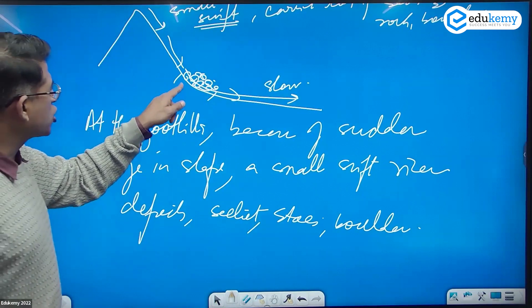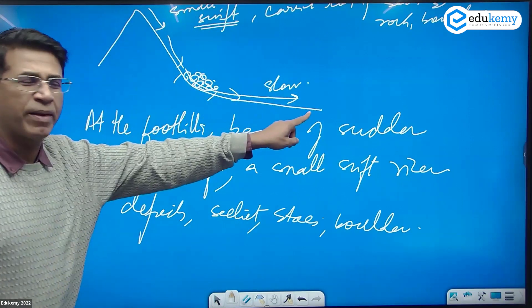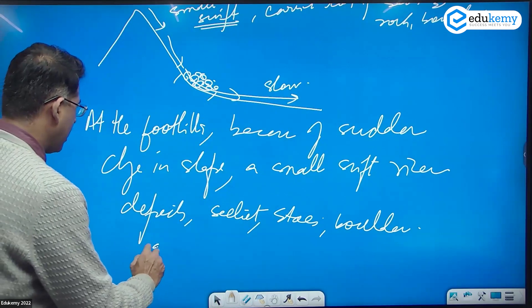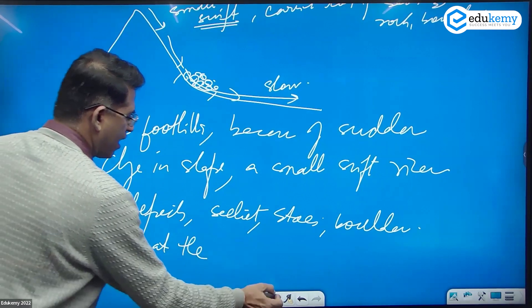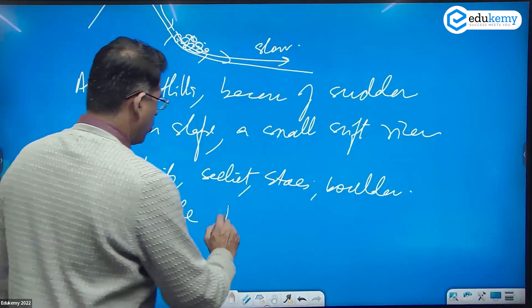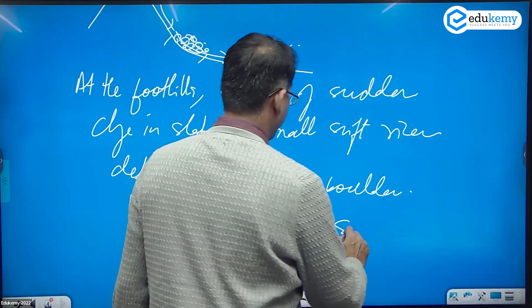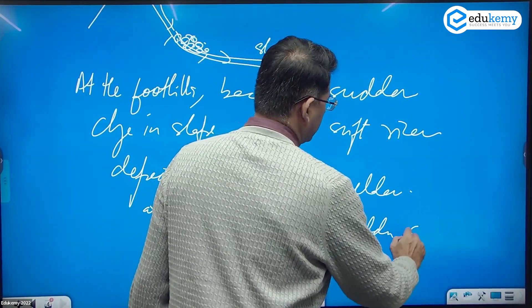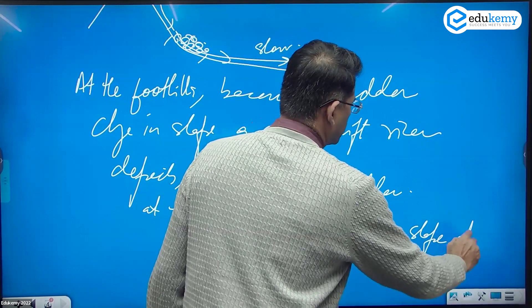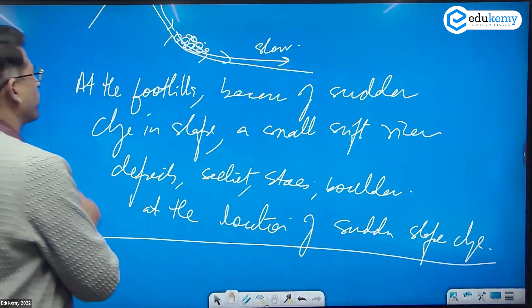At the junction of the mountain slope and the plains, boulders accumulate at the location of the sudden slope change.